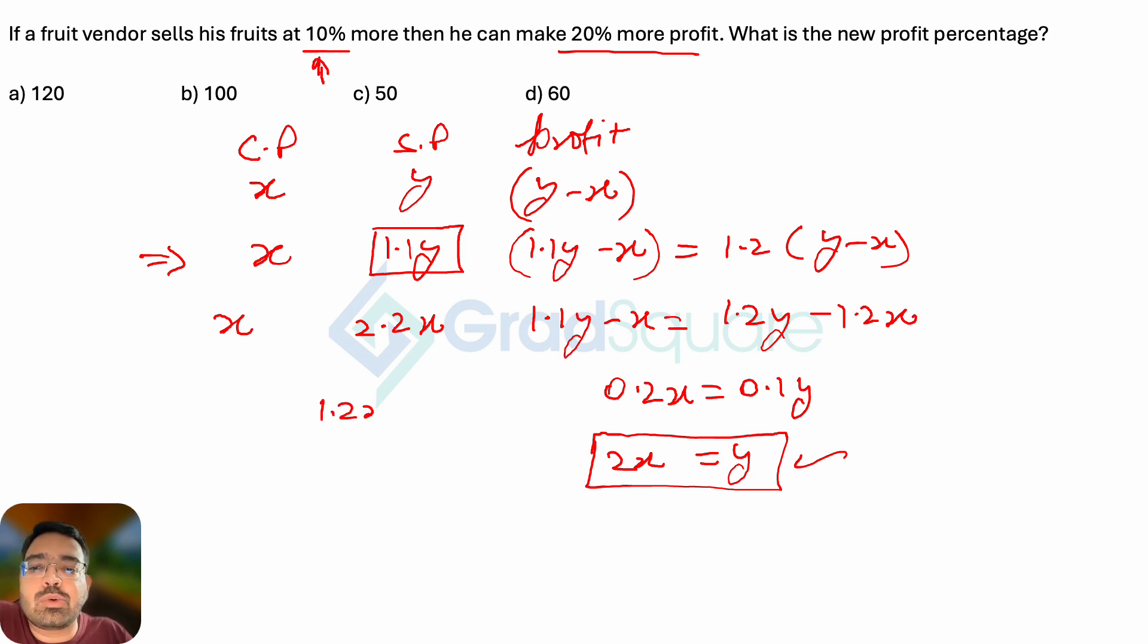So how much is the profit value now? 2.2x minus x, that is going to give me profit as 1.2x. Compare it with the cost price, which is x, multiplied by 100. You'll get 120% as the profit percentage in the new situation. Option A will be the correct answer.